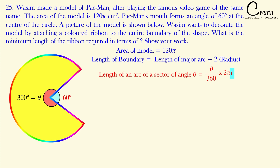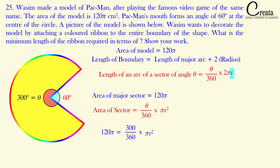To find the radius, we use the hint that the area of the model (major sector) is 120π cm². The formula for the area of a sector is (θ/360) × πr². Here θ = 300°. Substituting and solving, we get r² = 144, so r = 12 centimeters.